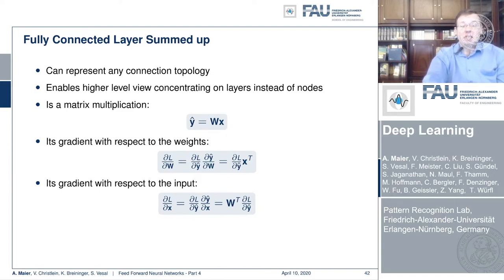The layer computes y-hat equals W times x — a matrix multiplication in the forward path. The gradient with respect to the weight W: we need a matrix derivative here, and the derivative of y-hat with respect to W is simply x transpose. So if we have the loss vector coming into our module, the update to our weight is going to be that loss vector multiplied by x transpose.